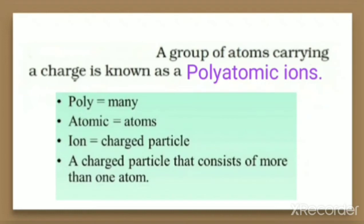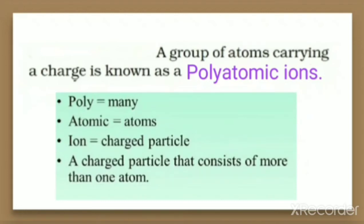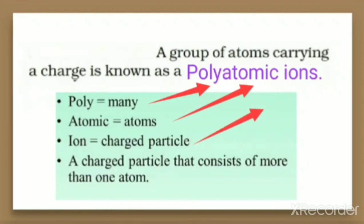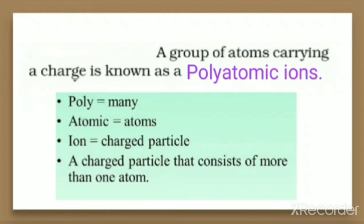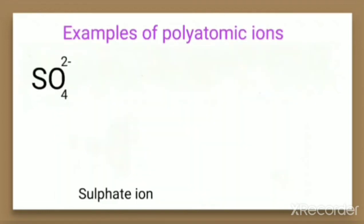A charged particle consisting of more than one atom is called a polyatomic ion. How do we define polyatomic ions? A group of atoms carrying a charge is known as a polyatomic ion. Or we can define it as: a charged particle that consists of more than one atom is called a polyatomic ion. Poly means many, atomic means atoms, and ion means charged species. Polyatomic ions are charged species consisting of more than one atom.